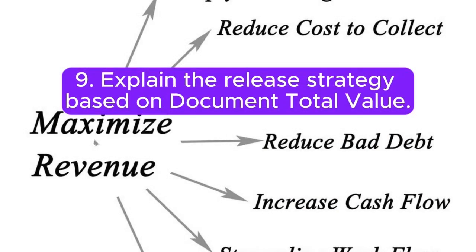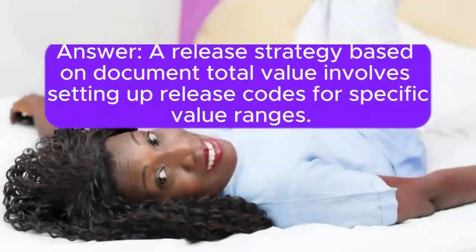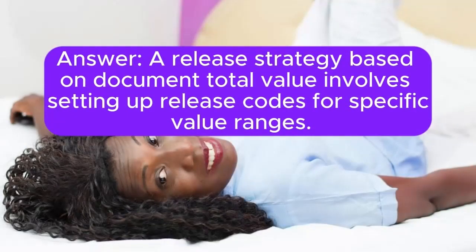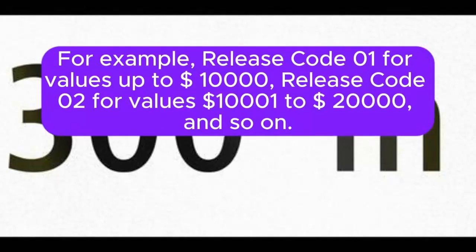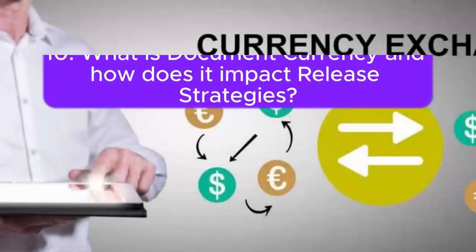Question 9: Explain the release strategy based on document total value. Answer: A release strategy based on document total value involves setting up release codes for specific value ranges. For example, release code 01 for values up to $1,000, release code 02 for values $1,000 to $2,000, and so on.